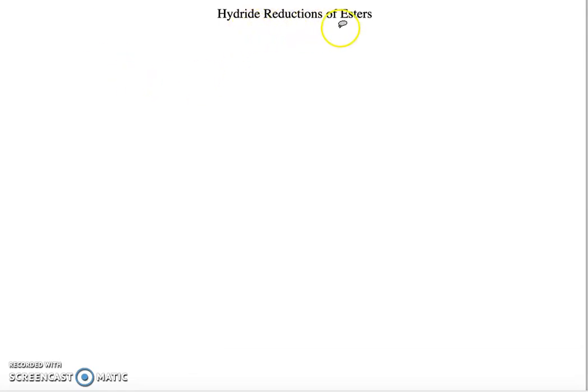I want to talk today about hydride reductions of esters. The prototypical example of this reaction is the use of lithium aluminum hydride to reduce an ester to an alcohol.